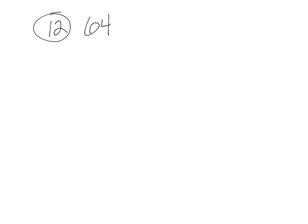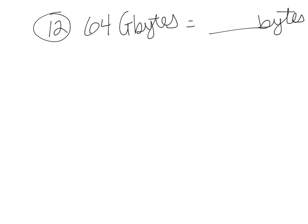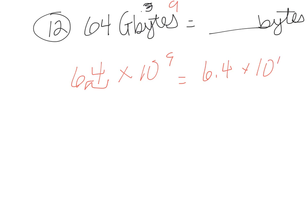Number twelve: an iPad has 64 gigabytes of memory — how many bytes is this? A gigabyte is 10 to the 9th. We can write this as 64 times 10 to the 9th bytes, but that's not proper scientific notation. So we're going to move the decimal over once and make it 10 to the 10th: 6.4 times 10 to the 10th bytes.